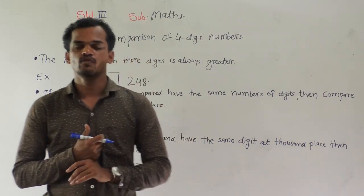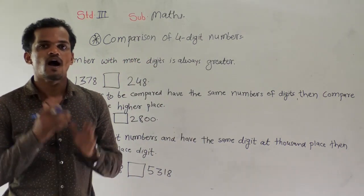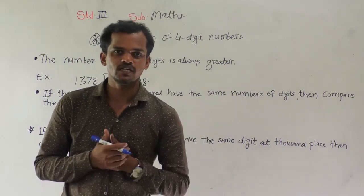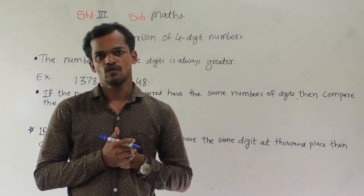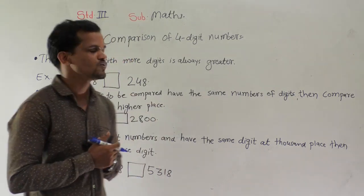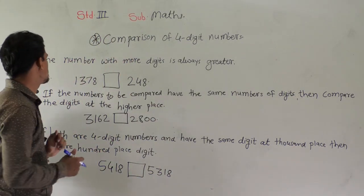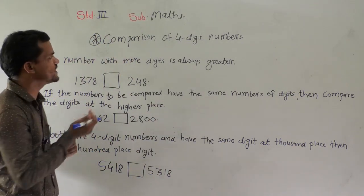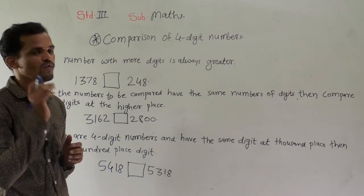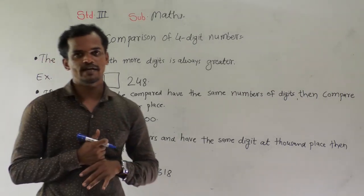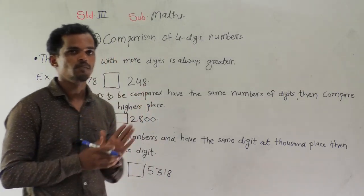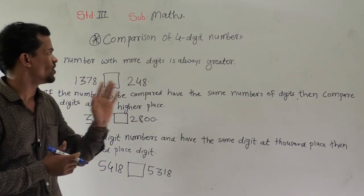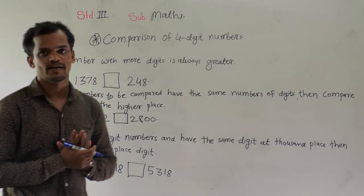As a student, today we will learn how to compare 4-digit numbers. The first case is that the numbers with more digits is always greater. The numbers with more digits is always greater.